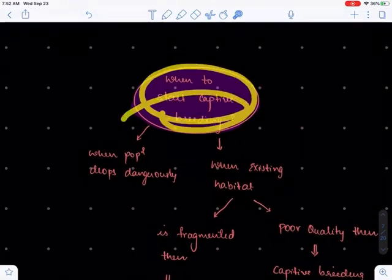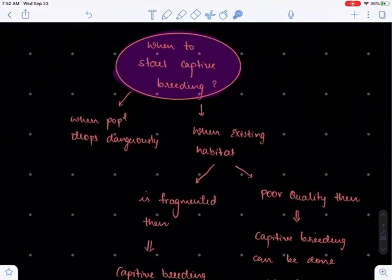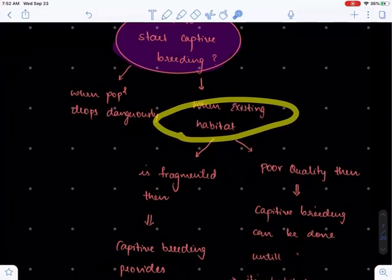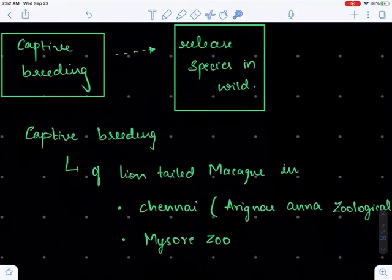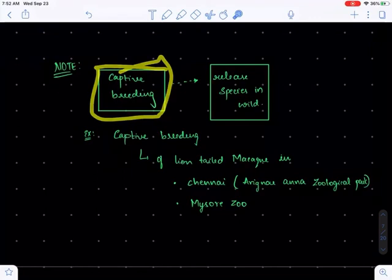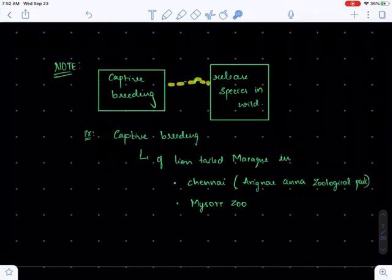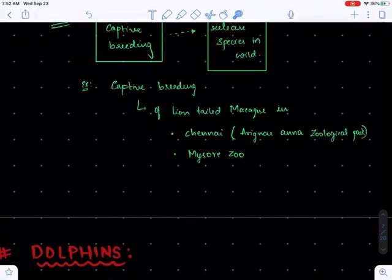These are the conditions for when we can go for captive breeding. Basically, whenever the population drops dangerously or whenever the habitat is fragmented or degraded. What we do is go for captive breeding, and once breeding is done, we release these species into the wild forest.